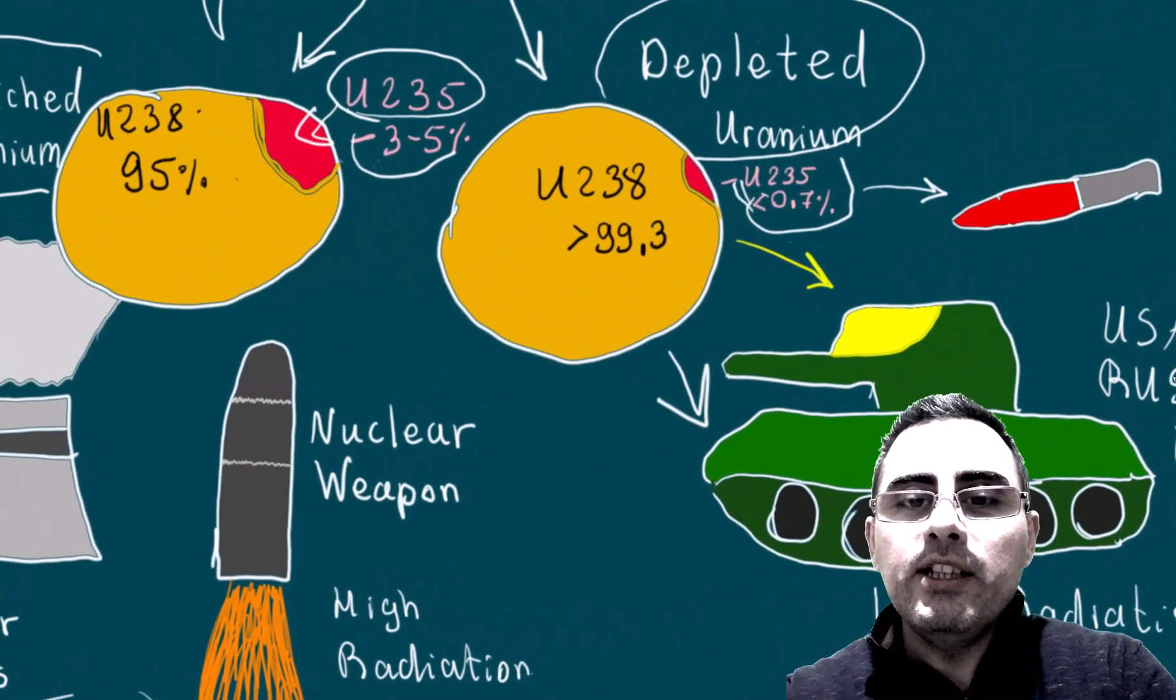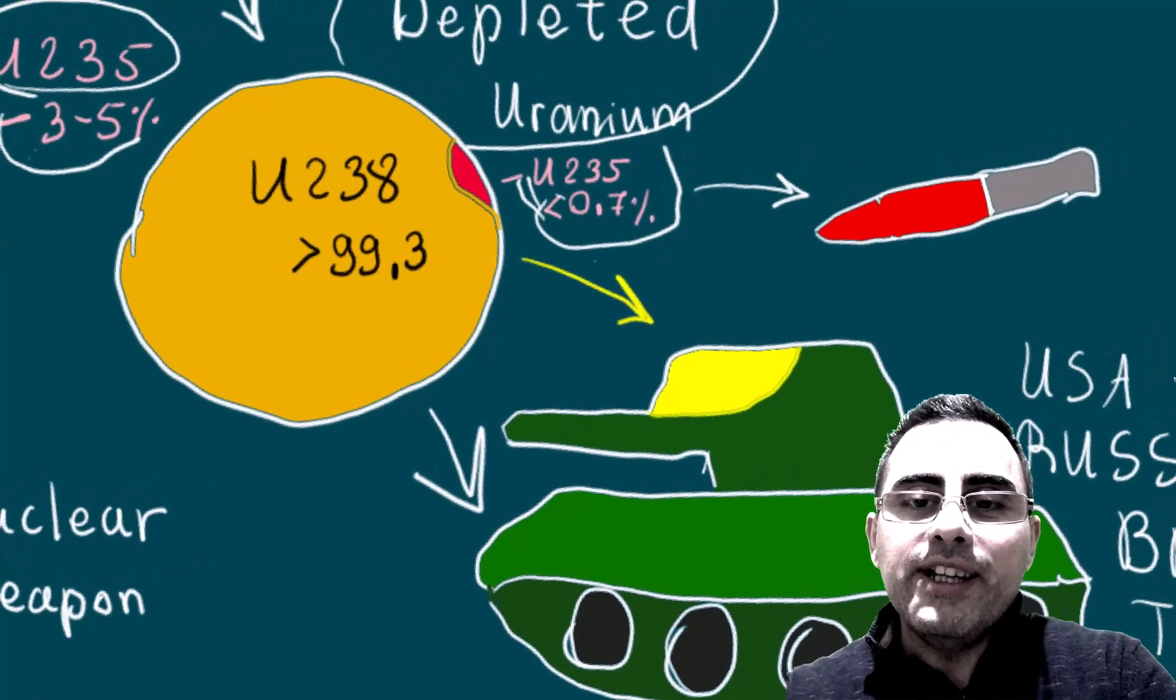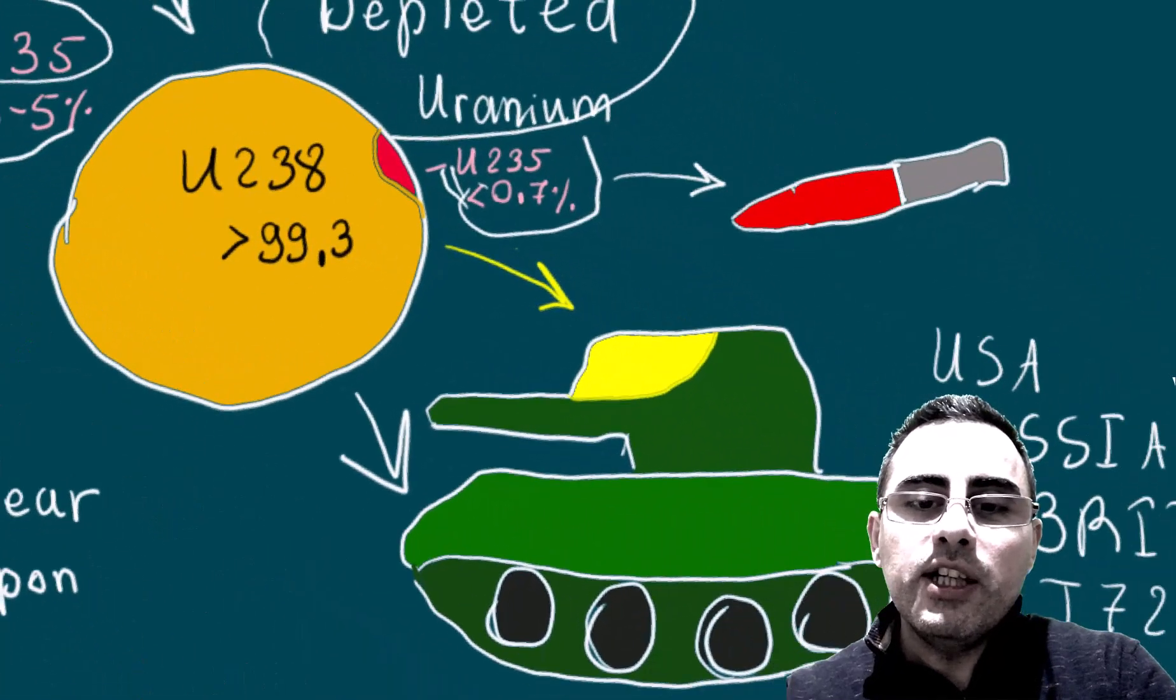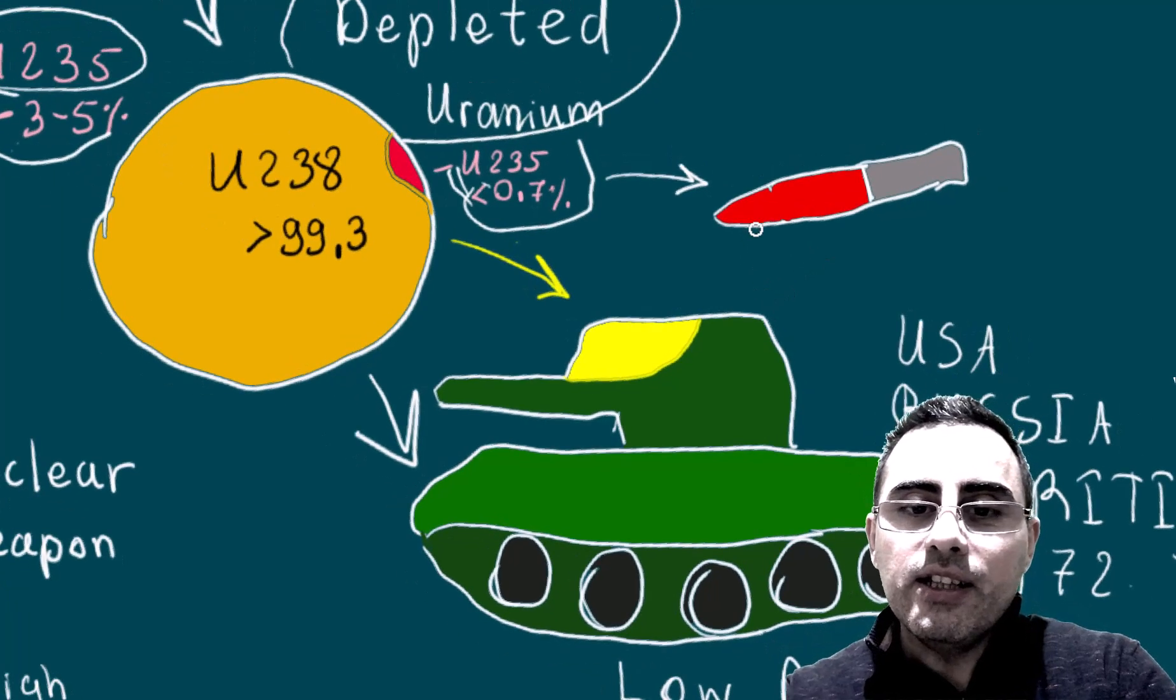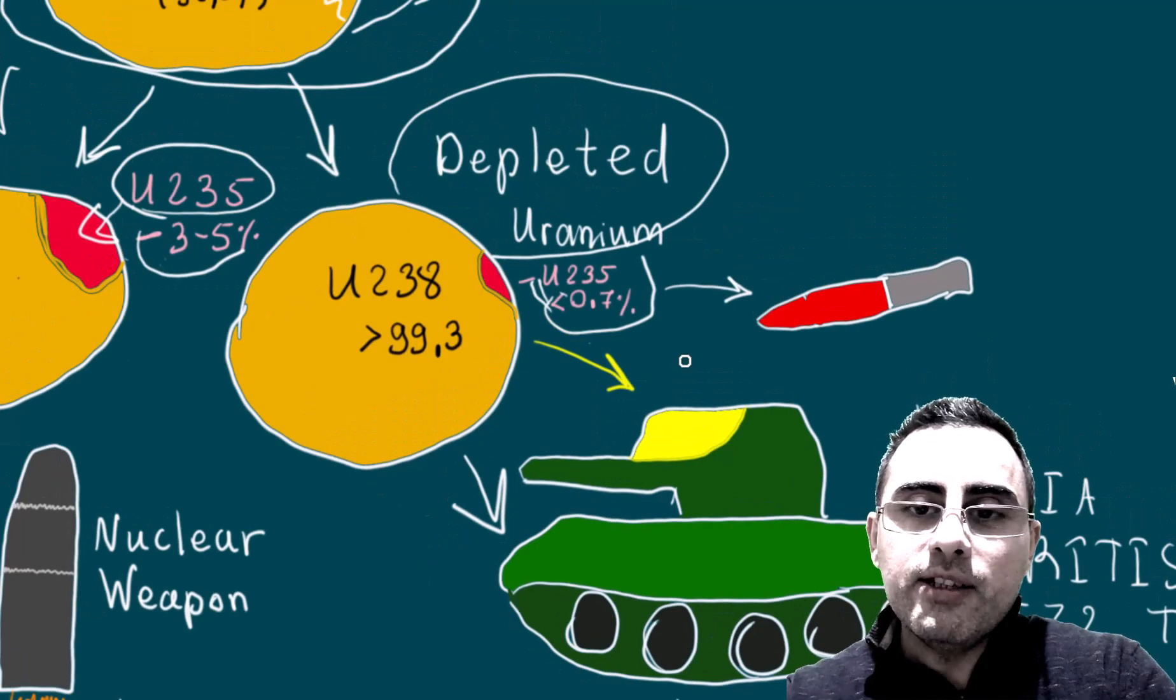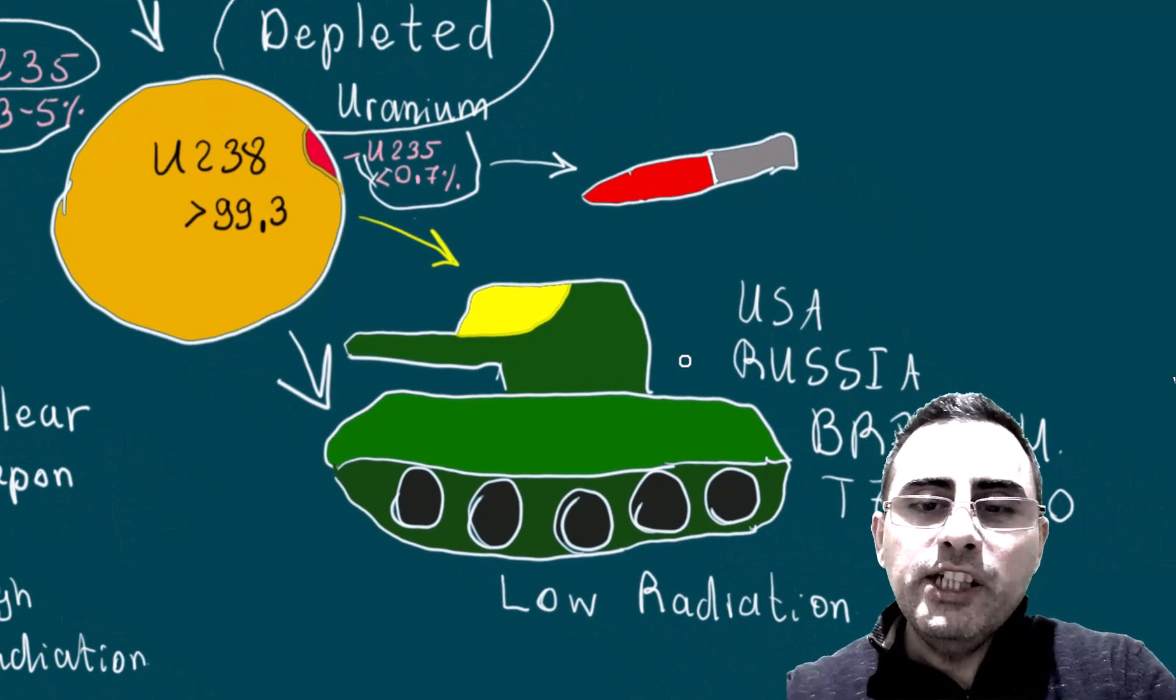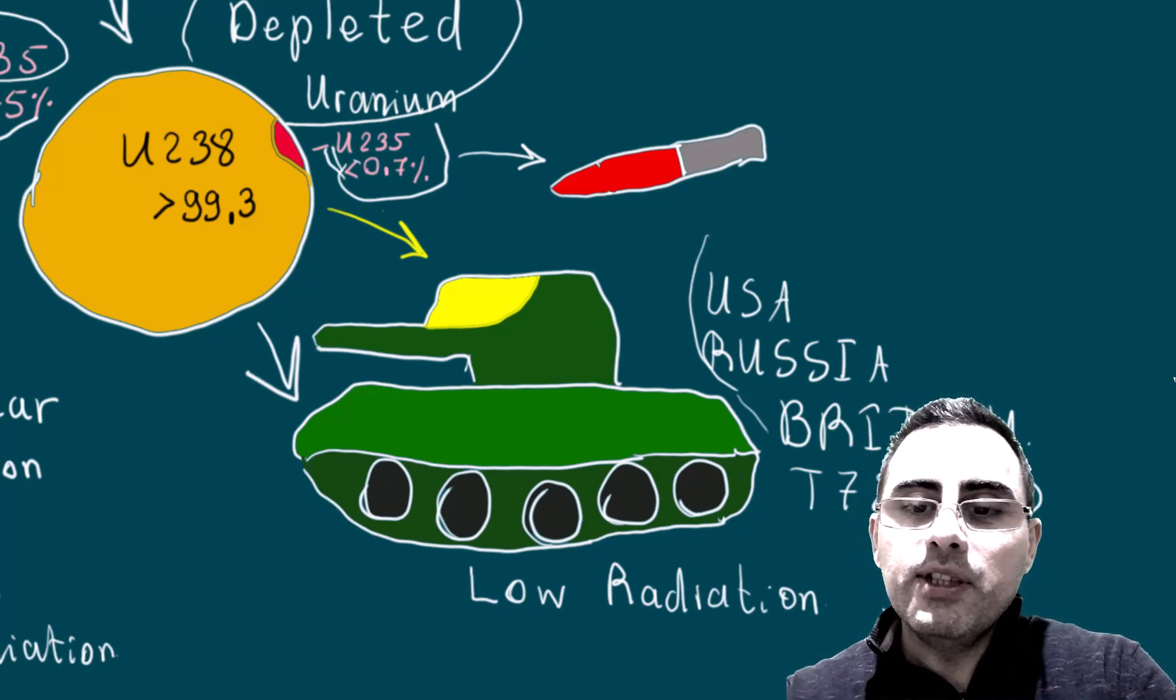Enriched uranium is used in nuclear plants and nuclear weapons and is highly radioactive. Depleted uranium, which is much less radioactive compared to enriched uranium, is used in ammunition because it has high density. That's why it is used as plates and armors of armored vehicles, rockets, and different types of armors.